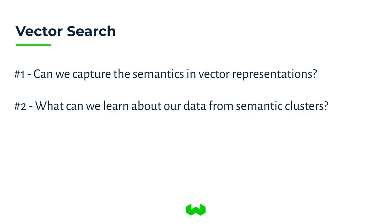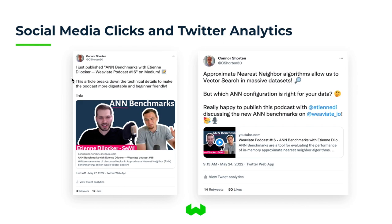Tying data science and vector search together is going to be done with the example of Twitter analytics. I've been making content on YouTube and Twitter for a while, and I'm really interested in figuring out the best way to do messaging and promote this content. So I'm looking at my own Twitter analytics data to segment it using vector search and get a better sense of distributions of metrics I care about, like impressions or URL clicks.